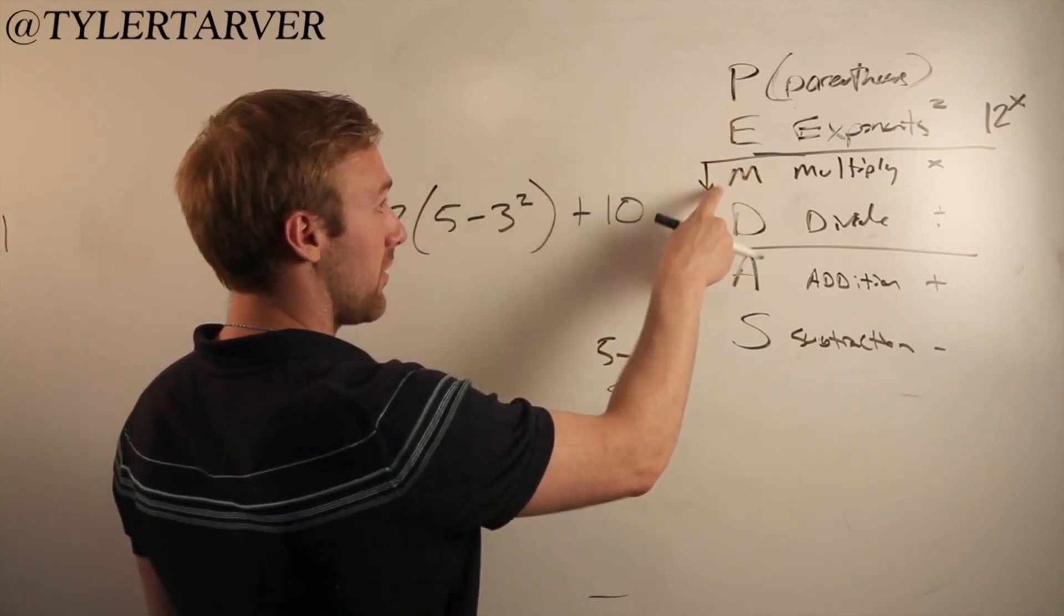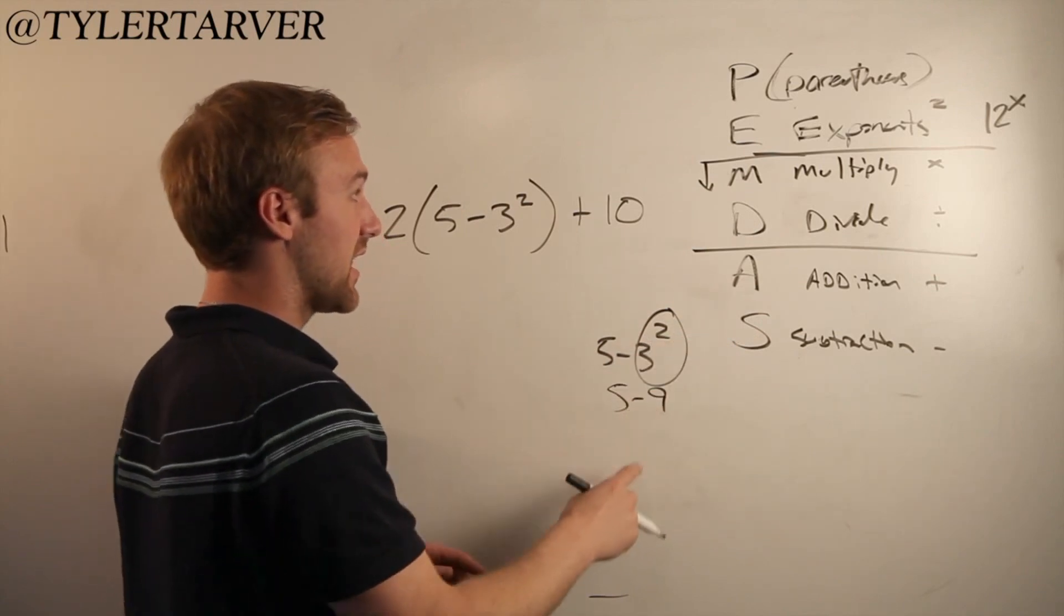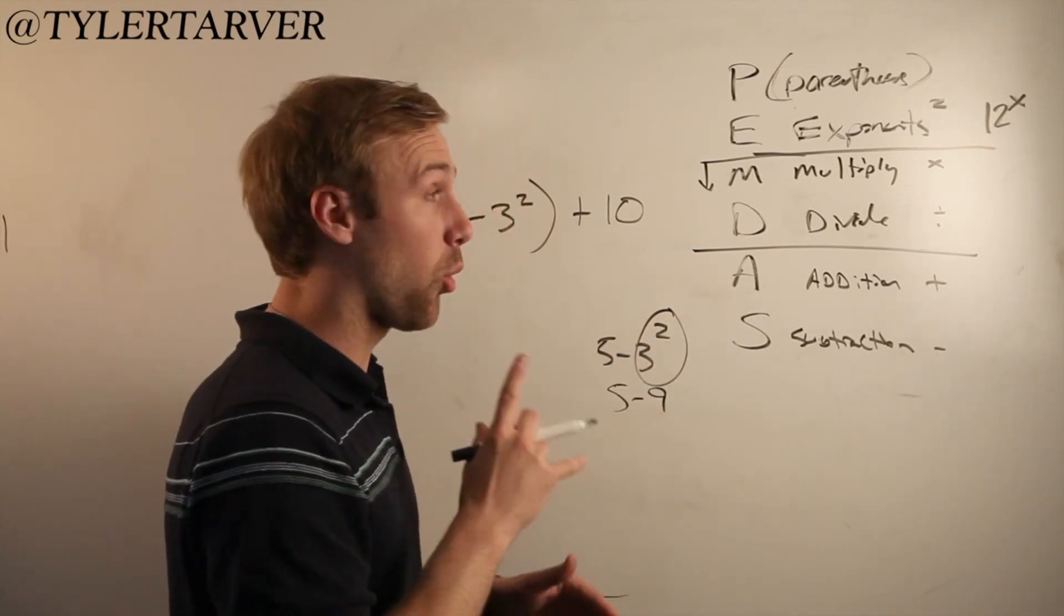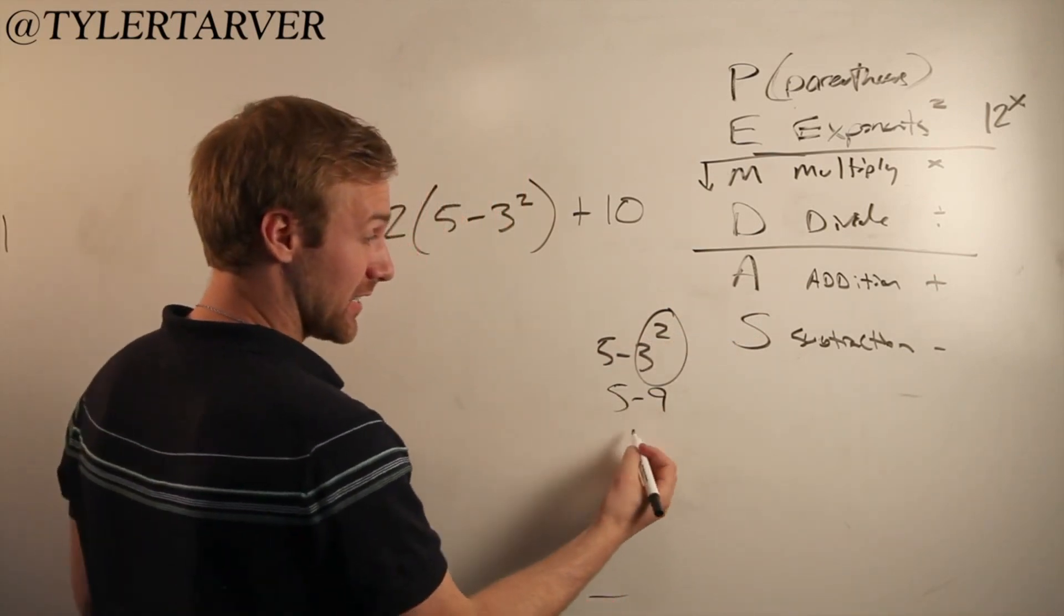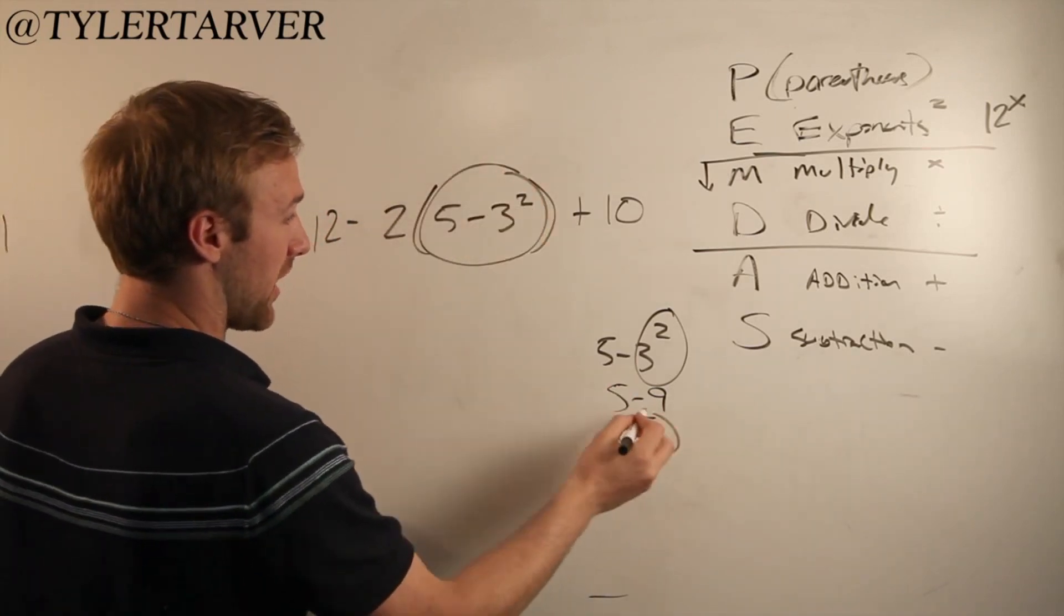Now we move down, multiply. There's no multiplication, no division, no addition. There's subtraction. 5 minus 9 is what? 5 minus 9 is negative 4. Now I can replace all this with my negative 4.